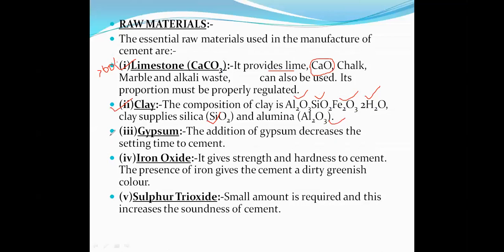The third main constituent in cement is gypsum. Gypsum is calcium sulfate hydrate, and it increases the lifetime of cement. The fourth composition is iron oxide, which is present in cement at about 3 to 5 percent and increases the mechanical strength of the cement.